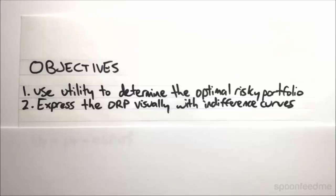So now we are going to have a look at how we can actually pick a specific single portfolio from the Efficient Frontier using the concept of utility which we borrow from economics. And then we are going to show how we can express this visually using what we call indifference curves.